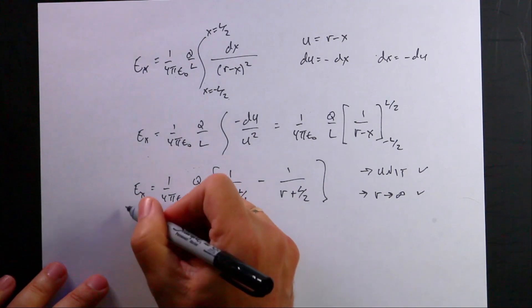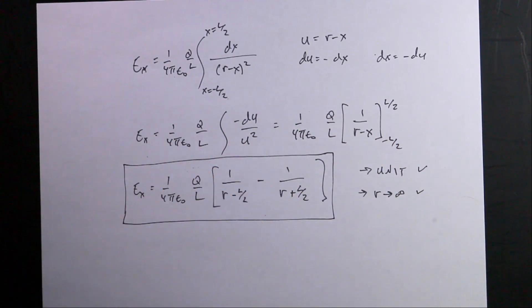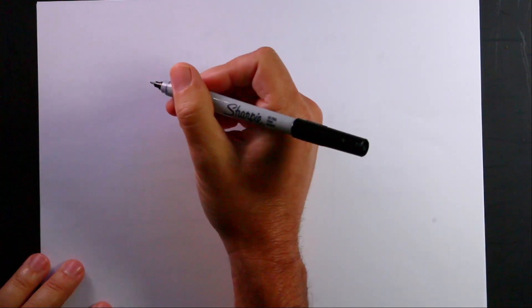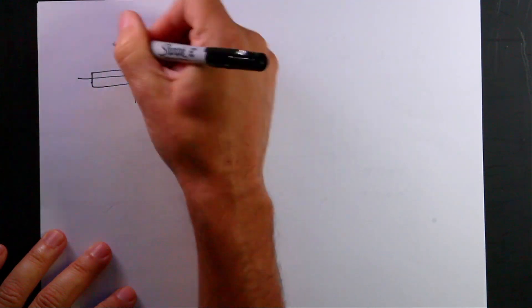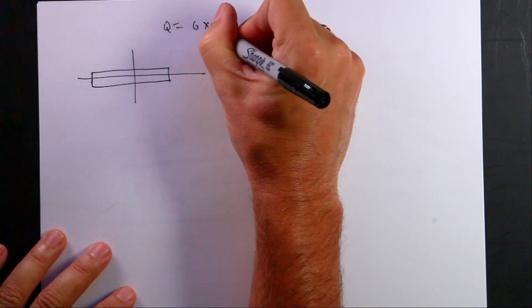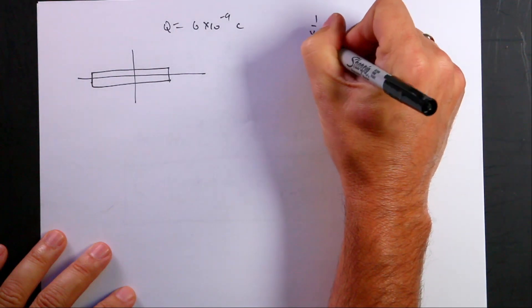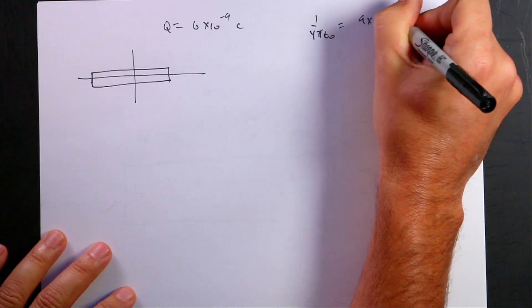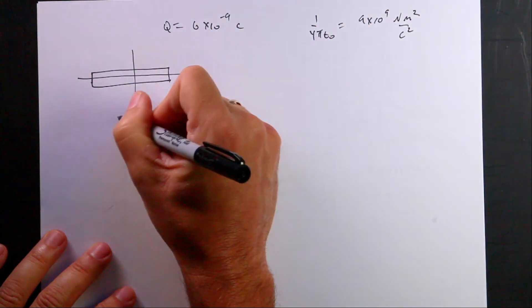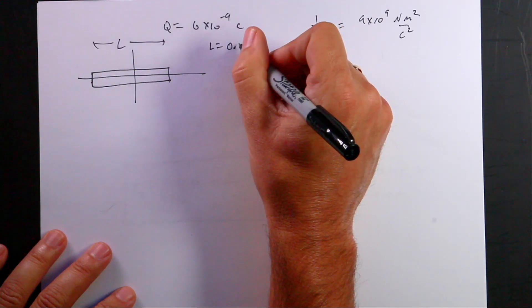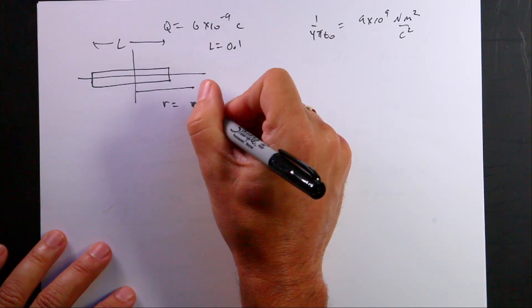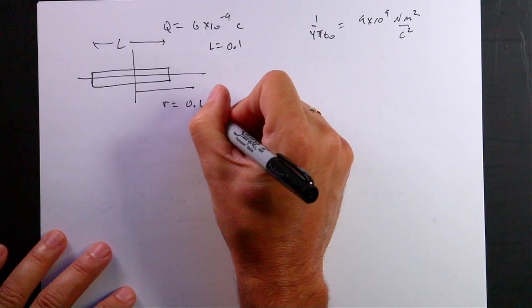Let's do this numerically. With a numerical solution I need specific numbers, but I can also plug those same values into my analytical expression to compare. So let's pick: Q = 6 nanocoulombs = 6 × 10⁻⁹ C, k = 1/4π epsilon-naught = 9 × 10⁹ N·m²/C², L = 0.1 m, and r = 0.15 m.